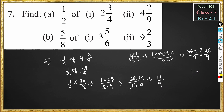In order to convert 19 by 9 to a mixed fraction: 9 twos are 18, remainder is 1. So 2 is the whole number part, 1 is the numerator, and 9 is the denominator. The answer is 2 and 1 by 9.